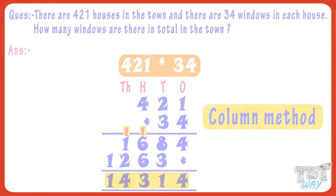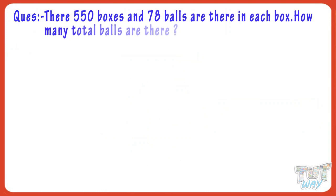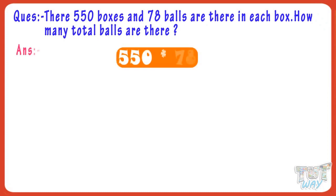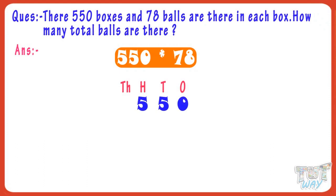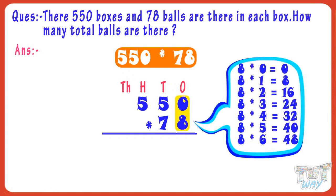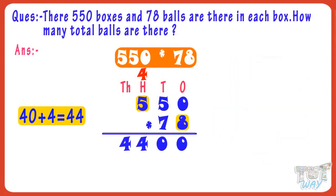There are 550 boxes and 78 balls in each box. How many balls are there in total? 550 multiplied by 78. First, align the numbers. Now multiply 550 with the ones digit of 78, that is 8. 8 multiplied by 0 equals 0 — anything multiplied by 0 is 0. 8 multiplied by 5 equals 40. Write 0 in the product and carry over 4, as we always keep the ones place and carry over the tens place.